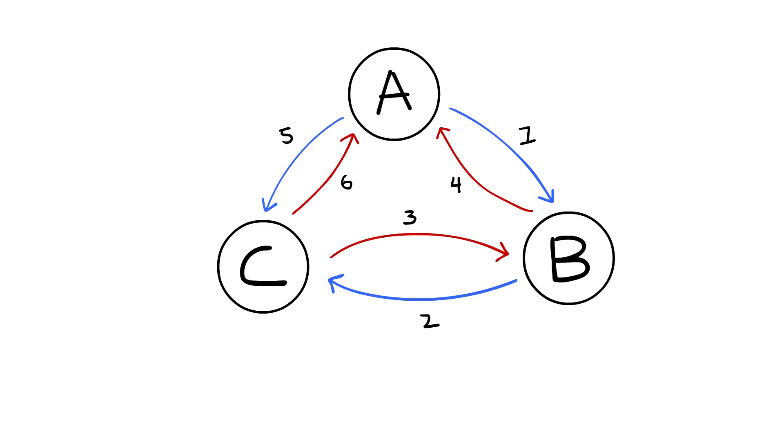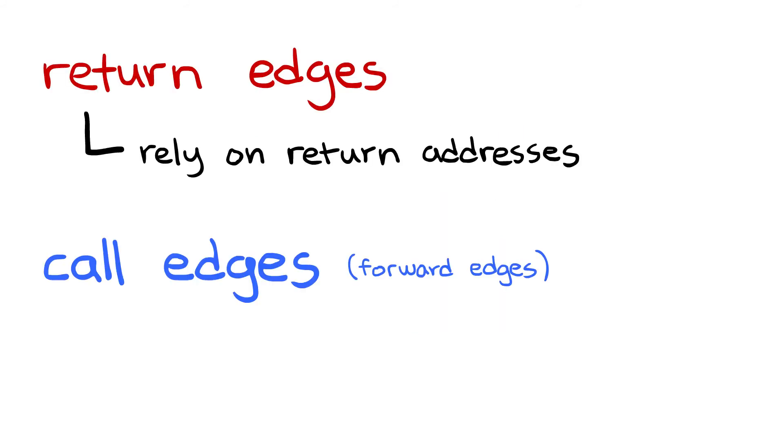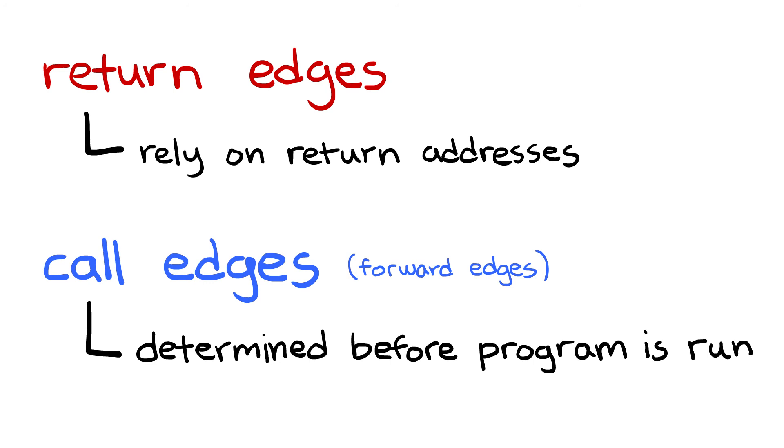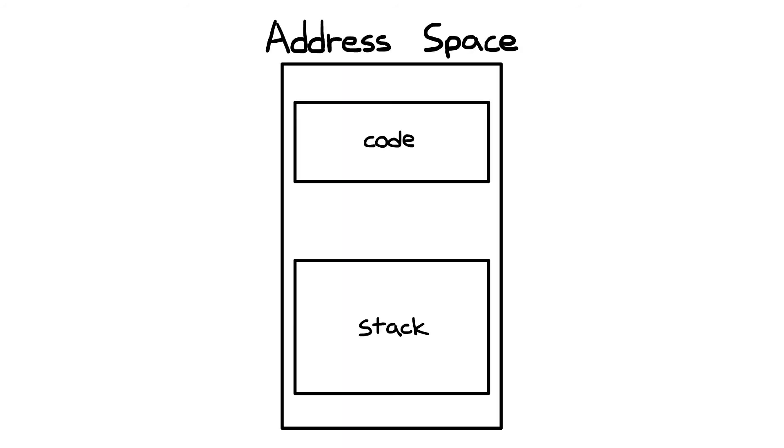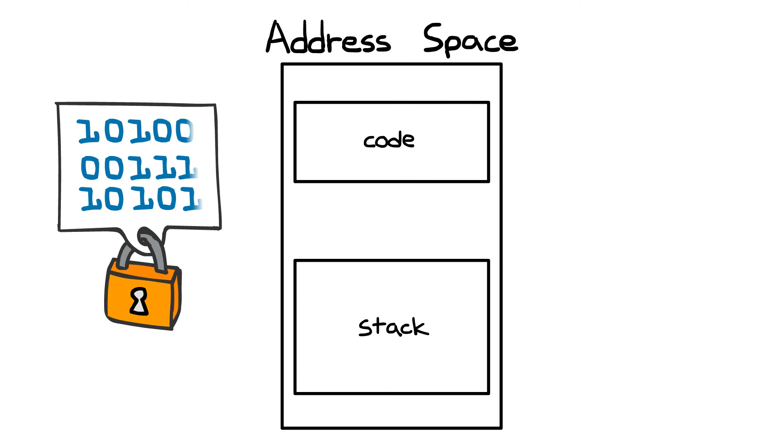This is the main reason why return edges are different than forward edges and why I draw them in different colors. Return edges rely on return addresses, whereas forward edges are determined before the program is even run. In fact, if you remember this address based diagram from the DEP video, we can more clearly see the difference between the edge types.